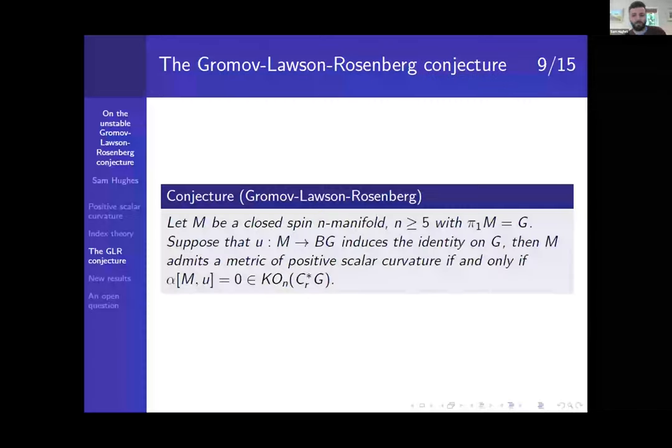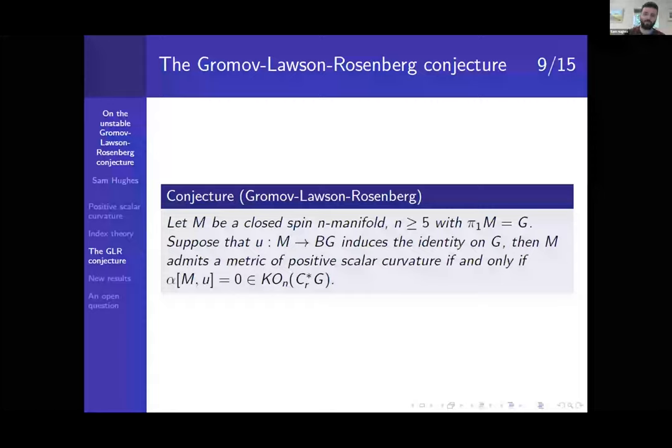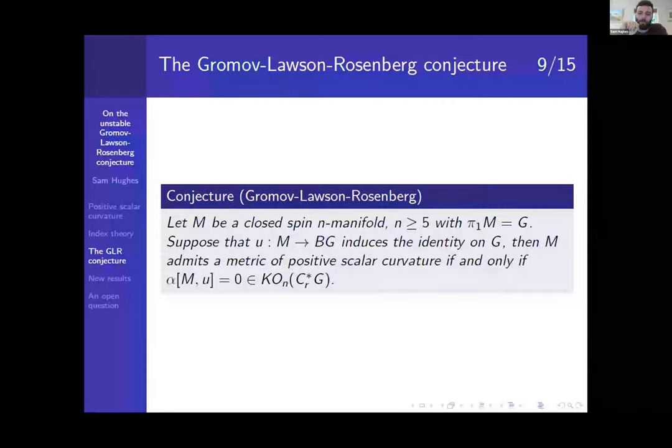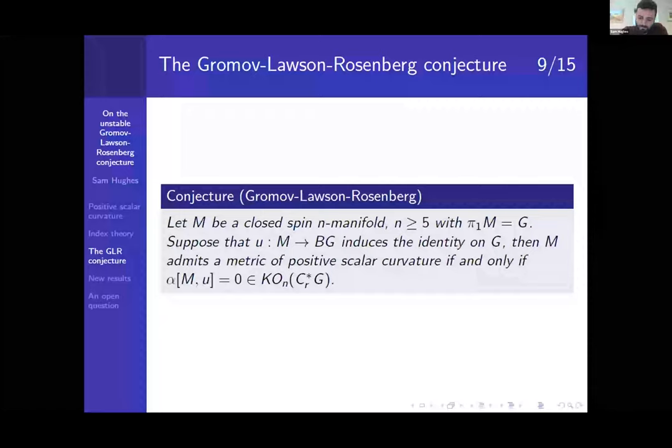Okay, so how can we turn this into something which is more general? The idea is that we take a closed spin n-manifold again, and we're going to only consider maps which induce an identity on the fundamental group of the manifold. And then the conjecture is that you only need to consider these maps. So if the class vanishes now, then G has a metric of positive scalar curvature, and if the class doesn't vanish, then it's not. So it's kind of like the necessary and sufficient condition. So hopefully the idea is that this is the only topological obstruction we need to consider.